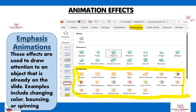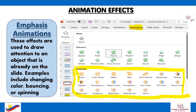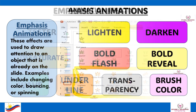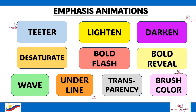Emphasis animations are used to draw attention to an object that is already on the slide. Examples include changing color, bouncing, or spinning. The following are the emphasis animations.